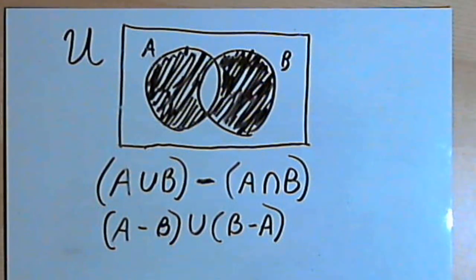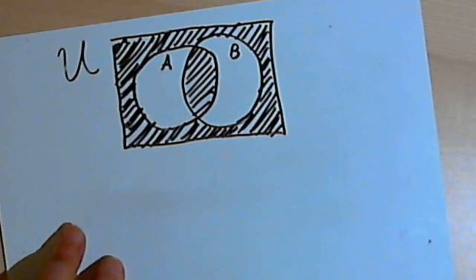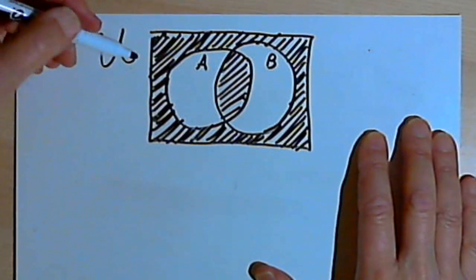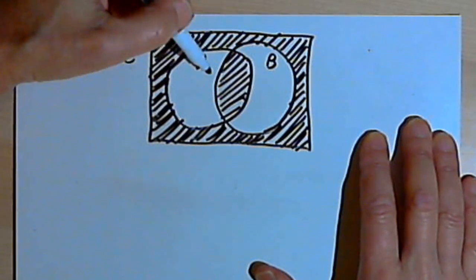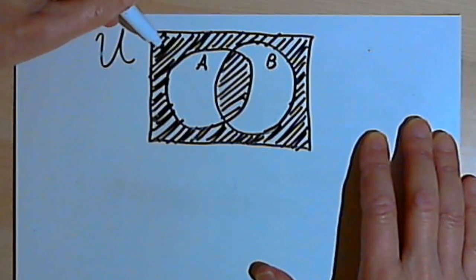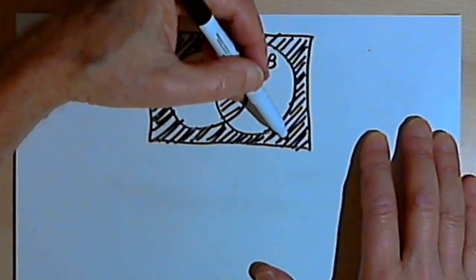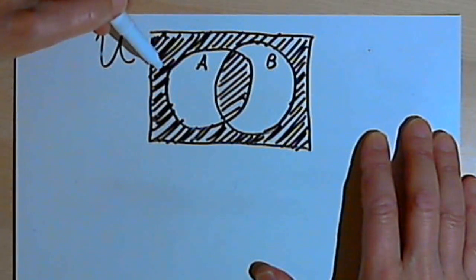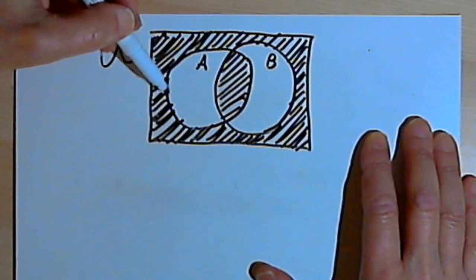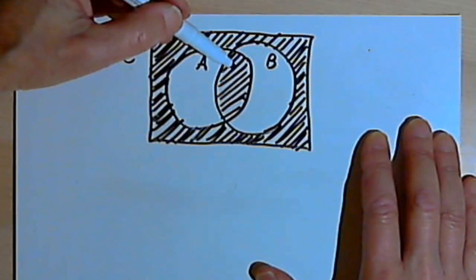Okay, here's another one. Here once again I have two overlapping sets A and B inside the universal set. And this time what I've got is everything outside of those two sets is shaded. And the overlap of A and B is shaded.